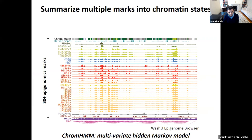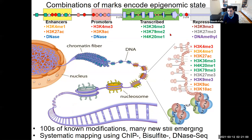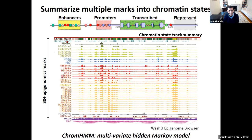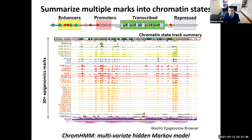Our group developed methods to systematically annotate and discover these chromatin states using a hidden Markov model whose hidden states correspond to enhancers, promoters, transcribed regions, and repressed regions — learned completely de novo across the entire genome. This multivariate HMM discovers combinations of histone modification marks in non-random patterns. Promoter and enhancer states are only about 1% or less of the genome yet are very distinctly discovered.